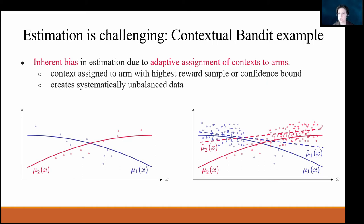This is an example where even though I've generated the data myself and understand the data generating process, if I'm naive and don't take into account the way I generated the data, I'll end up with bad inferences and my bandit won't get to the right answers as quickly. I have a paper in AAAI demonstrating this with further simulations and showing how techniques from causal inference can help eliminate these problems.